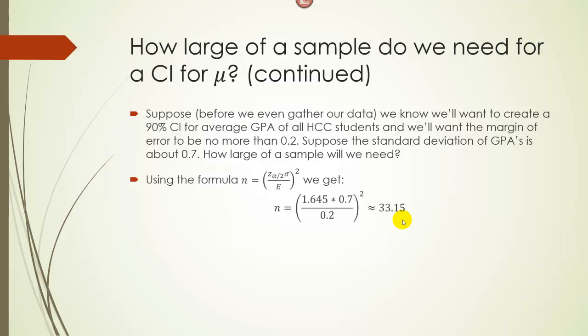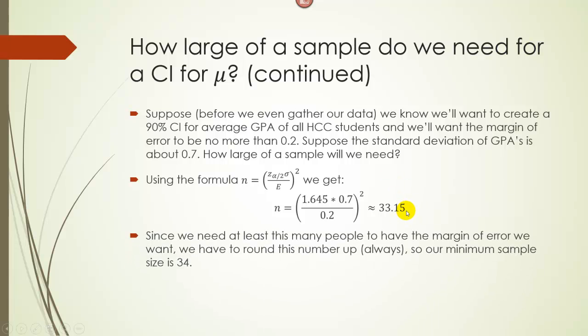So in other words, round this number up, always. And you're going to get that we need a sample size of at least 34 people to generate the interval that I'd want to generate.